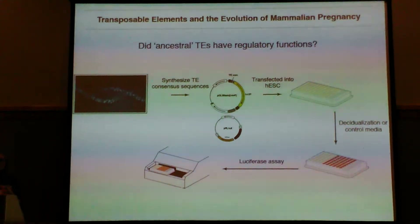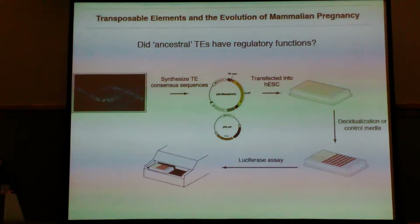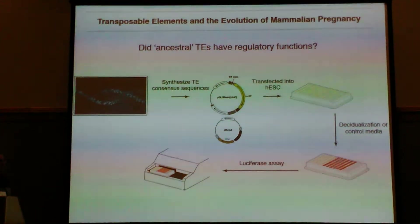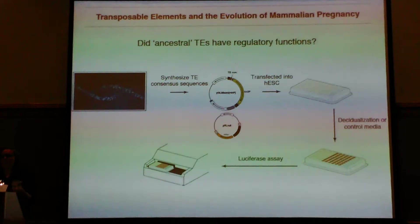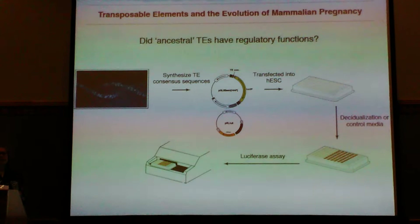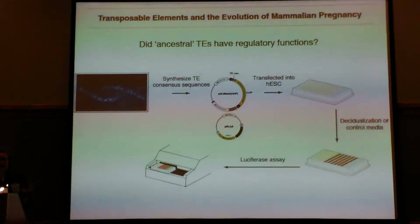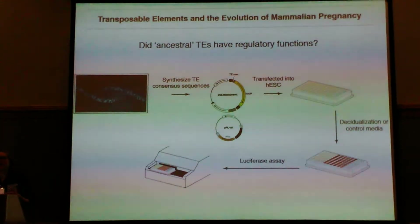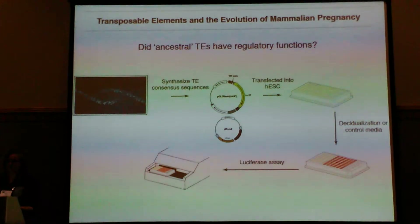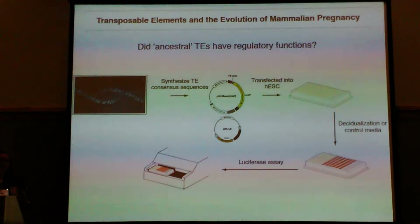I then take these plasmids and transfect them into endometrial stromal fibroblasts. These are the precursors to the decidual stromal cells. I can then give half of these cell populations progesterone and cyclic AMP, which are the pregnancy signaling factors, to trick them into thinking they're pregnant and differentiate them into decidual stromal cells. This gives me two cell types to test for the ability of these transposable elements to drive luciferase expression, and lets me look for progesterone responsiveness.